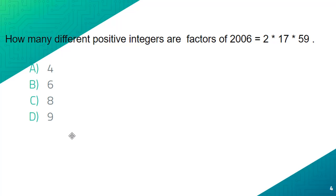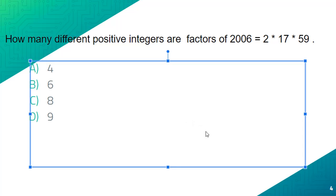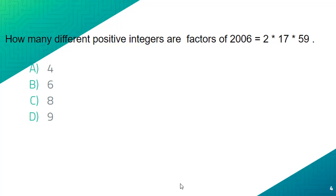Our next question is: how many different positive integers are factors of 2006, which equals 2 times 17 times 59? What we can do for this question is figure out all the factors. The factors are 1, 2, 17, 34, 59, 118, 1003, and 2006. If we figure out how many of those there are, it would be 8. So our answer would be C.